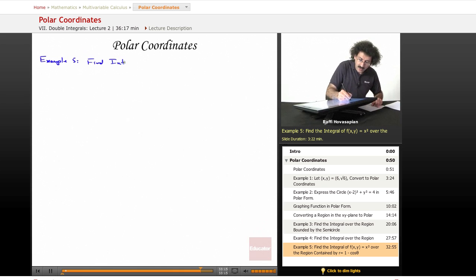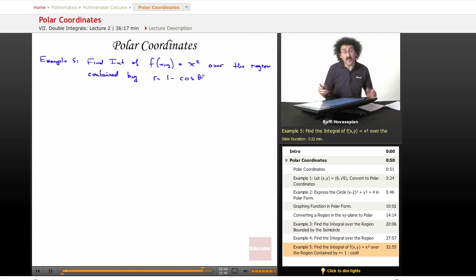Find the integral of f(x,y) = x² over the region contained by r = 1 - cos(θ). So in this particular case, they gave us the equation, the particular region in polar coordinate form already.